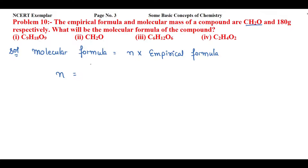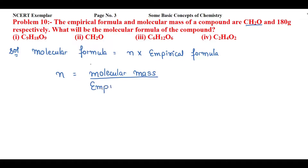To find N, we use the relation: N = molecular mass divided by empirical formula mass.